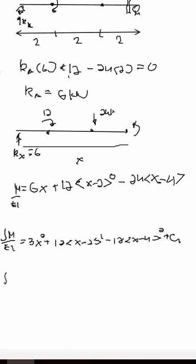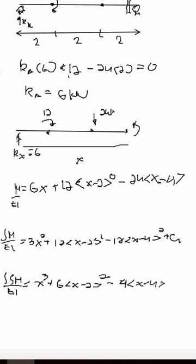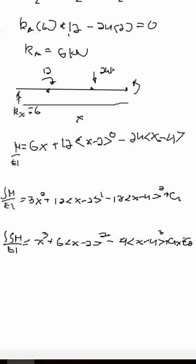Integrating again to obtain the deflection equation: EI·Y equals X cubed plus 6(X minus 2) squared minus 4(X minus 4) cubed, plus C1·X plus the constant C2. This double integration of the moment equation gives us the deflection at any point along the beam.